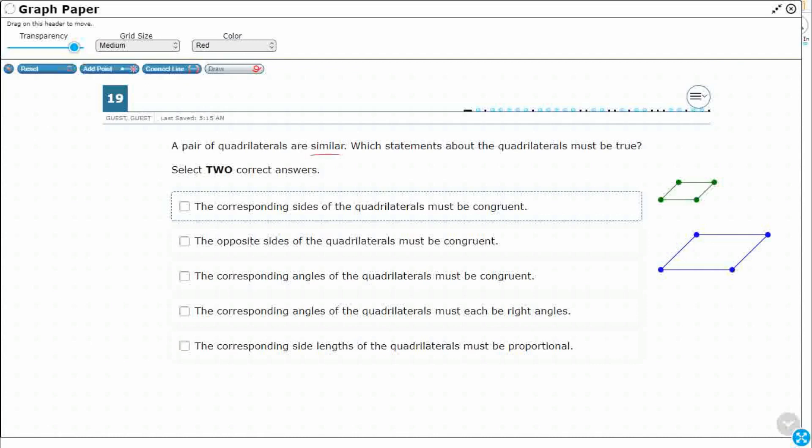So what does this mean when we've got similar quadrilaterals? Well, that means they are proportional. We can compare the side lengths, and we can put them in a ratio, and each of the side lengths are going to be proportional, and we can describe them in a ratio. But this first answer choice right here, congruent, that's the other big term that we need to keep in mind.